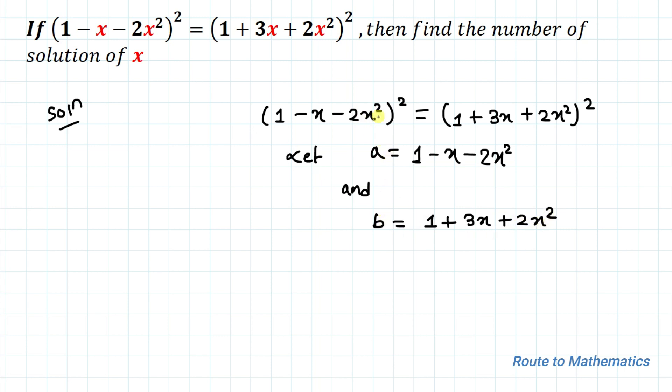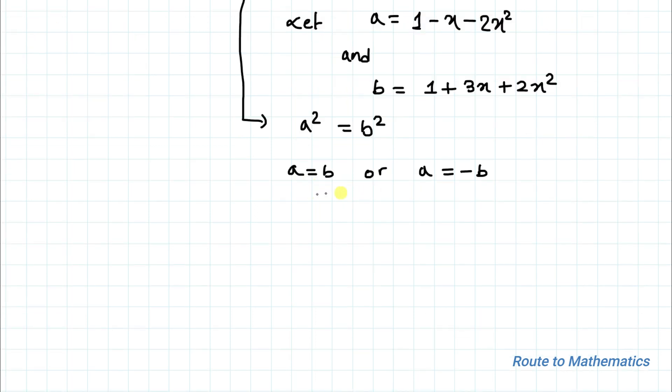By substituting a and b in the given equation, our equation becomes a² equals b². Here we will apply the logic that the square of two variables are equal only when the two variables are equal, or a equals -b. So here we have two cases.